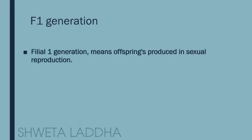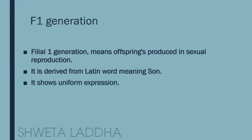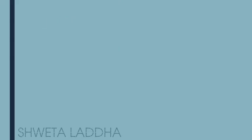Now let us see what is F1 generation. F stands for filial. Filial one generation means offspring produced in sexual reproduction. This filial term is derived from a Latin word meaning son. It shows uniform expression.